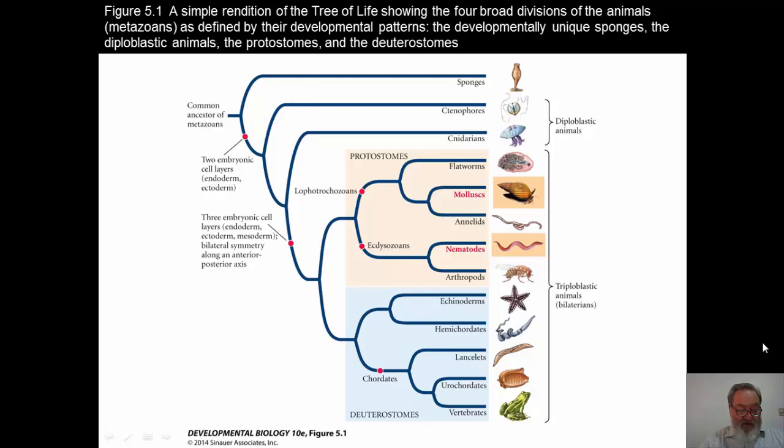Different species specify these axes at different times, but cleavage always precedes gastrulation. However, in some species, axis formation begins as early as oocyte formation. It begins while it's an immature oocyte, and it can be completed during cleavage in some organisms or extend all the way through gastrulation as in Xenopus.